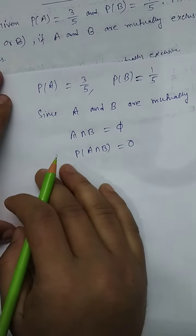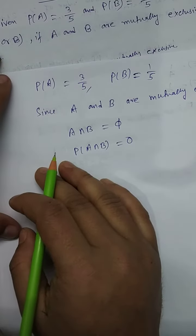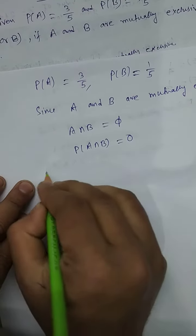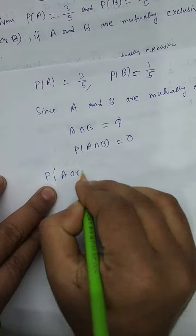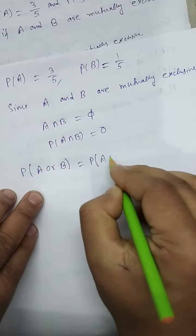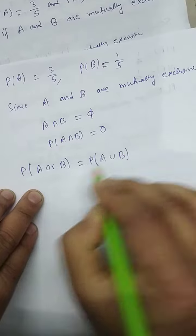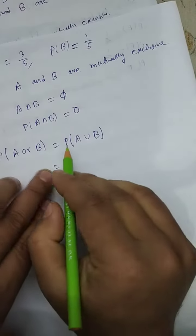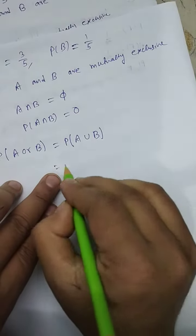So now we have to find probability of A or B. Here, probability of A or B equals probability of A union B. So probability of A union B means P(A) plus P(B) minus P(A intersection B).